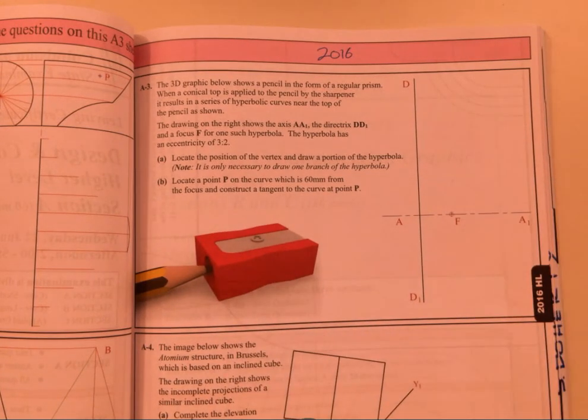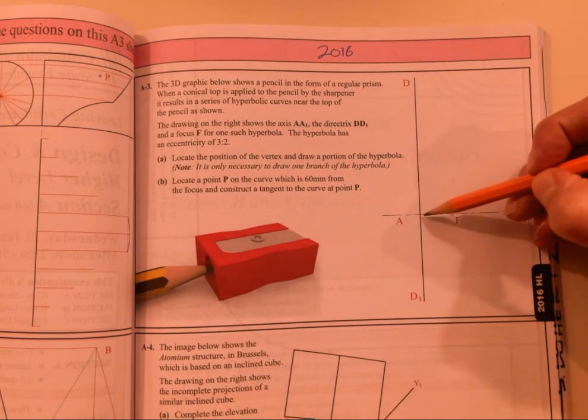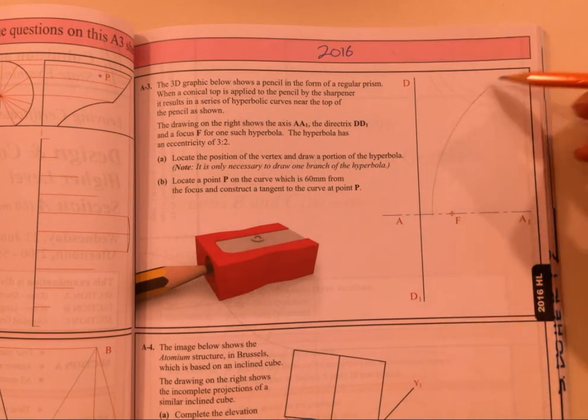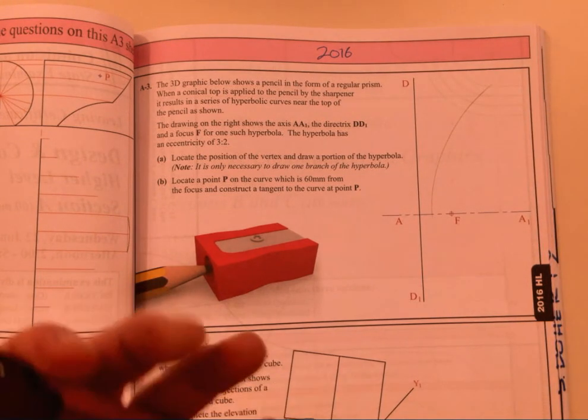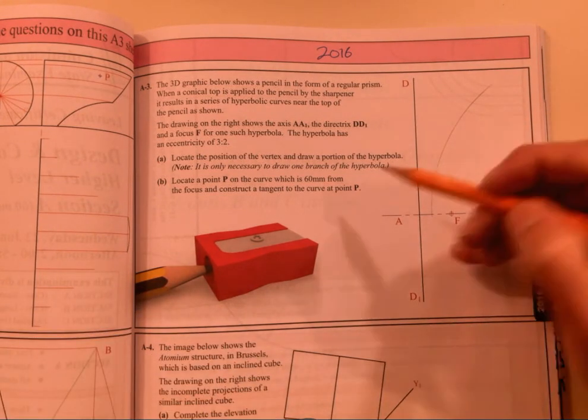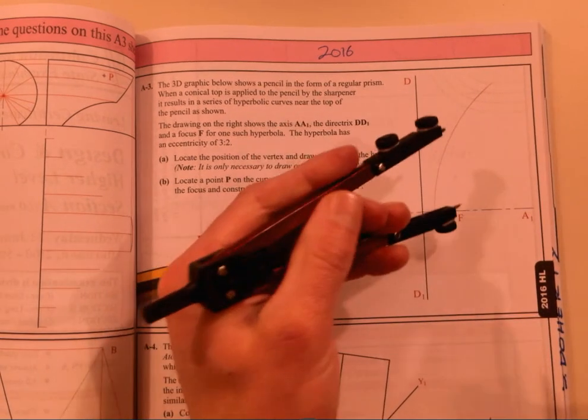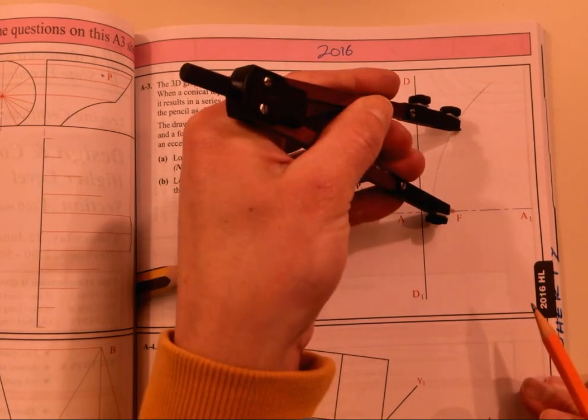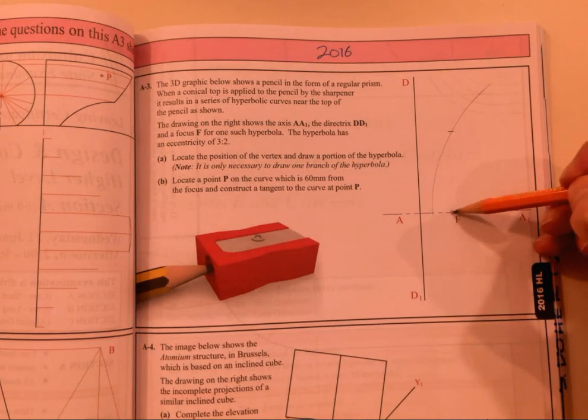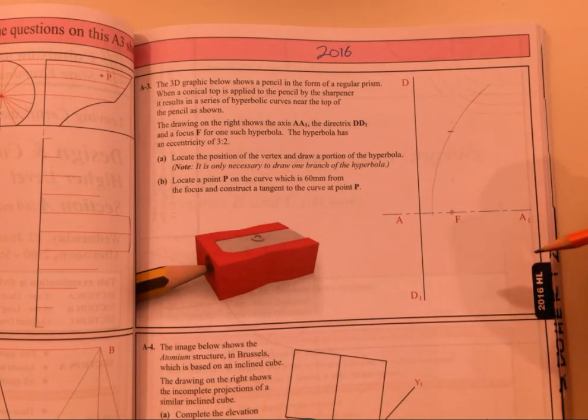Locate a point P on the curve which is 60 millimeters from the focus. So locate from the focus when you get your curve. Your curve is going to be here someplace. 60 distance, so get something 60 mil away on the curve. Set 60 on my compass, strike an arc. That is a point 60 mil from the curve, and we want to draw a tangent in there. So that should be pretty straightforward.